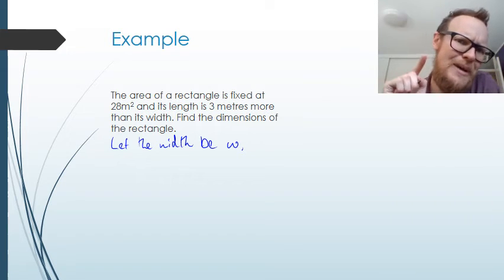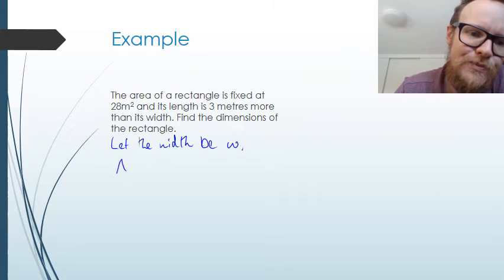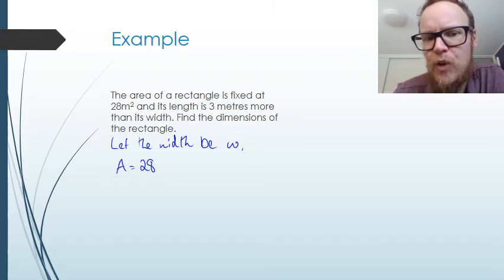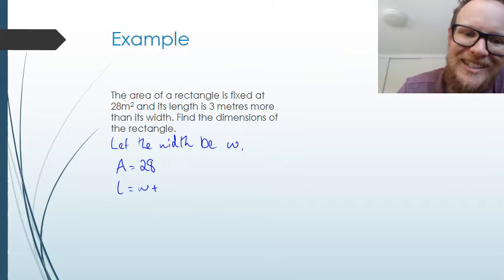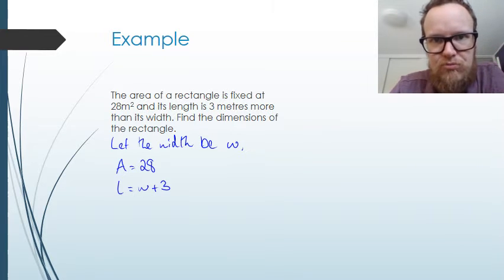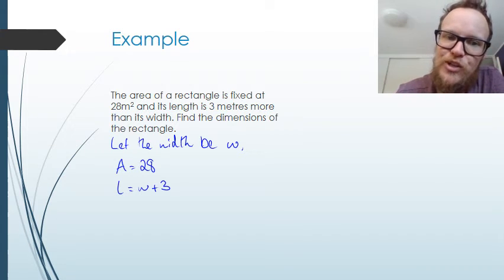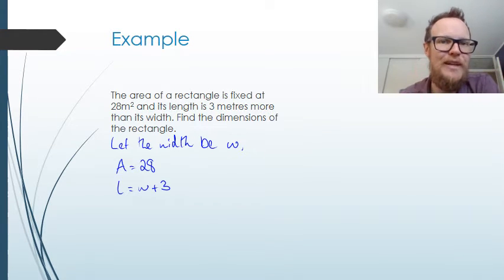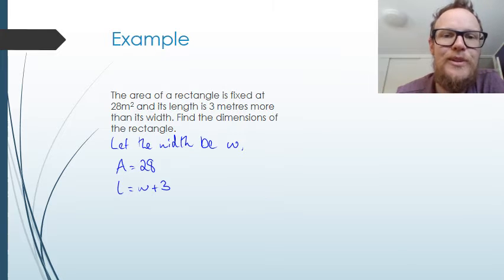Let's write down some extra information that we know. We know that the area of our rectangle is equal to 28 square meters. We also know the length of the rectangle is going to be the width plus 3. The width plus 3. So we've got these pieces of information. We've got the width being w, length being l here.